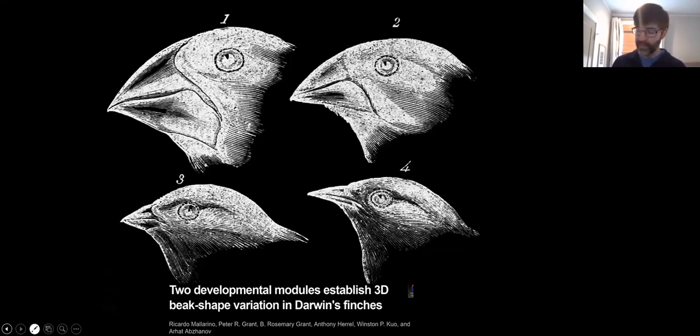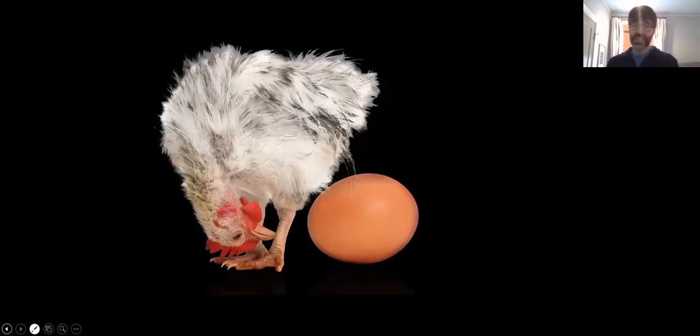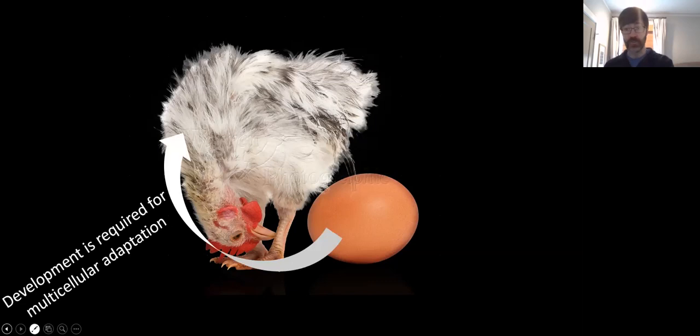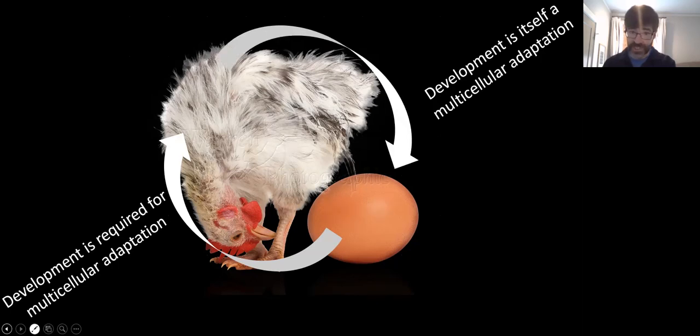So for extant multicellular organisms, this is a very complicated topic. This is what developmental biology is seeking to understand. But if we take a step back and think about nascent multicellular organisms, think about organisms right after they make the leap to the multicellular lifestyle, we run into a problem. Because on the one hand, development is required for multicellular adaptation, as we just laid out a minute ago. On the other hand, development is itself a multicellular adaptation. These multicellular developmental genes aren't directly playing a role in the unicellular ancestors' life.